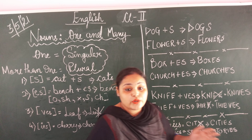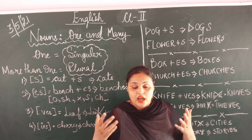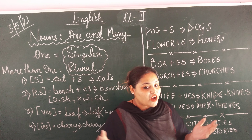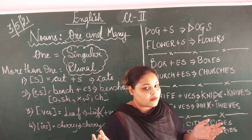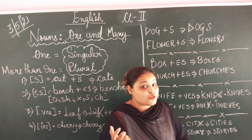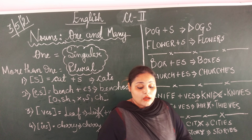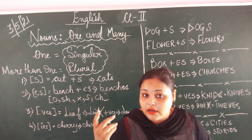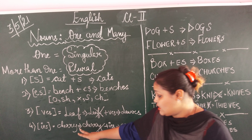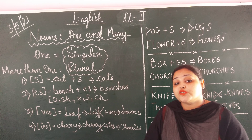I hope the concept is clear to you. Now I will ask you some examples — just answer me. Calf — yes, we are going to remove F and add VES: calves. Next, army — what is it ending with? Y. So we cancel Y and add IES: armies.